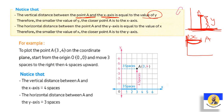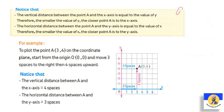For example, to plot the point (3, 4): we go right three steps, then go up four steps. We reach the point called A at (3, 4).